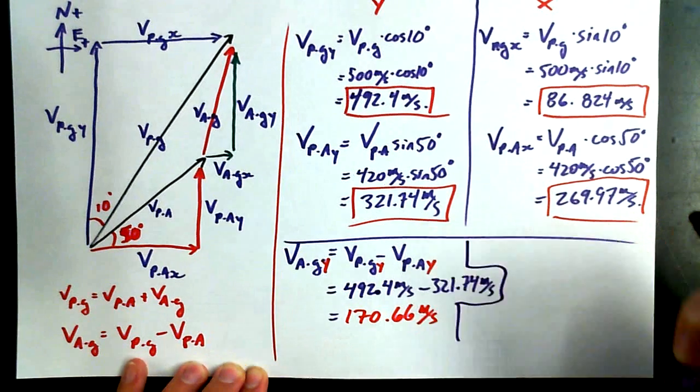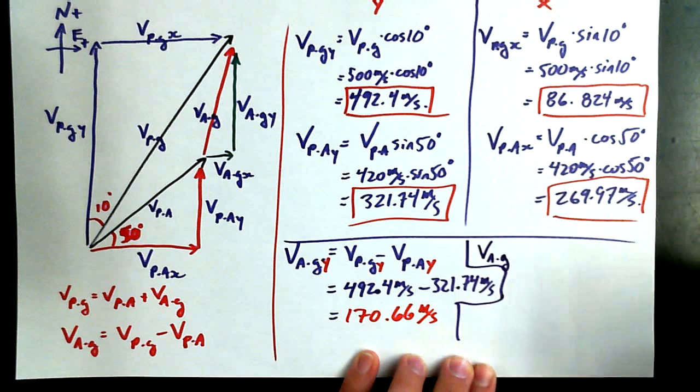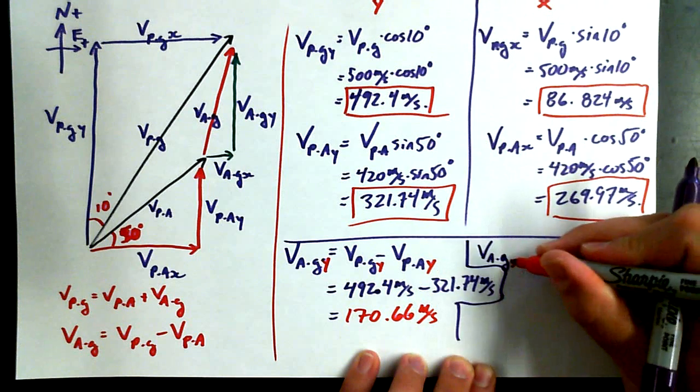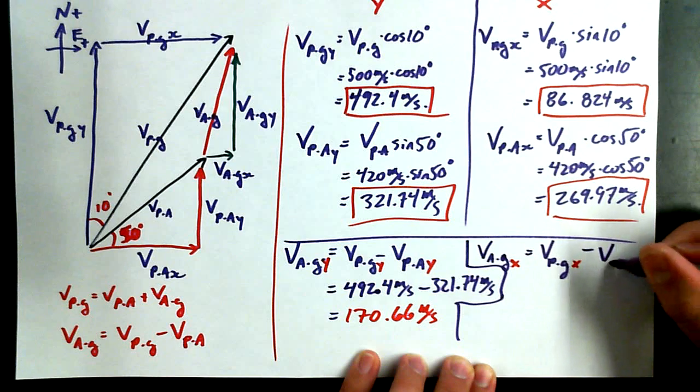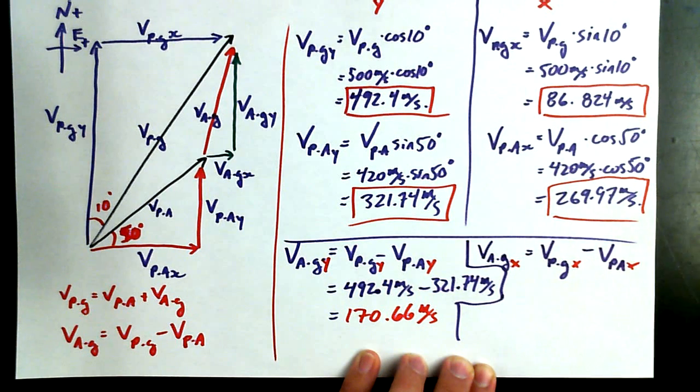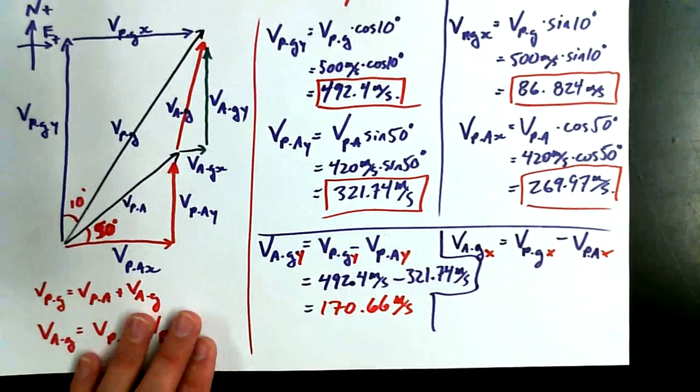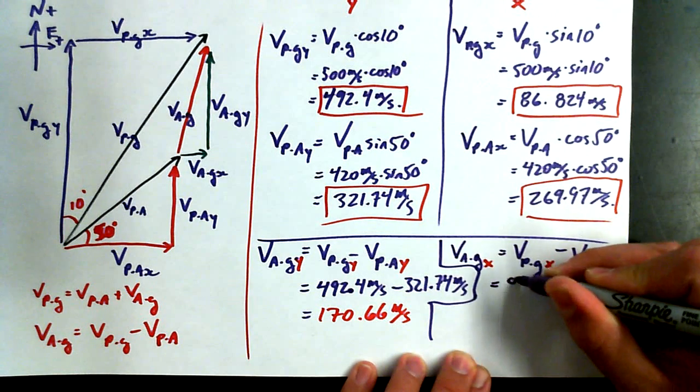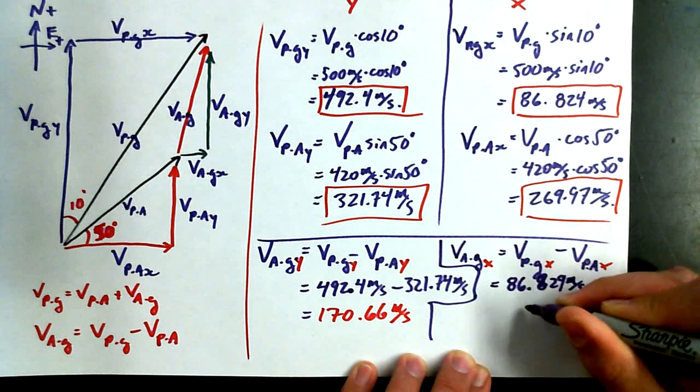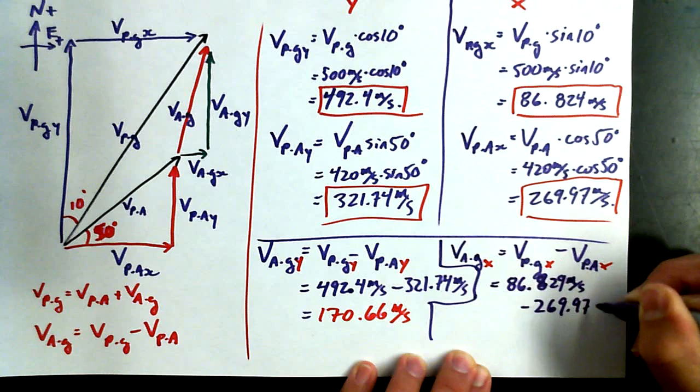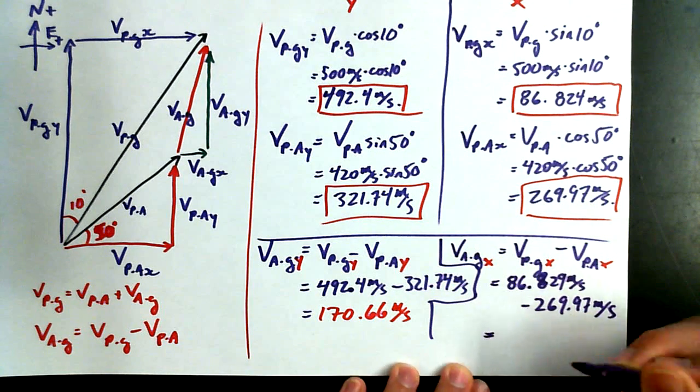All right. I'm going to tackle the X's then. And what must be true about the Y's is probably going to carry through for the X's, but I'll spell it out. V, A, G in the X direction, the X direction is equal to V, P, G in the X direction, minus V, P, A in the X direction. Okay. And we can plug in our values and solve for that. I'm going to run out of space here because I didn't leave myself enough paper, but I'll try and do my best. 86.2, or sorry, 829 meters per second, minus 269.97 meters per second.